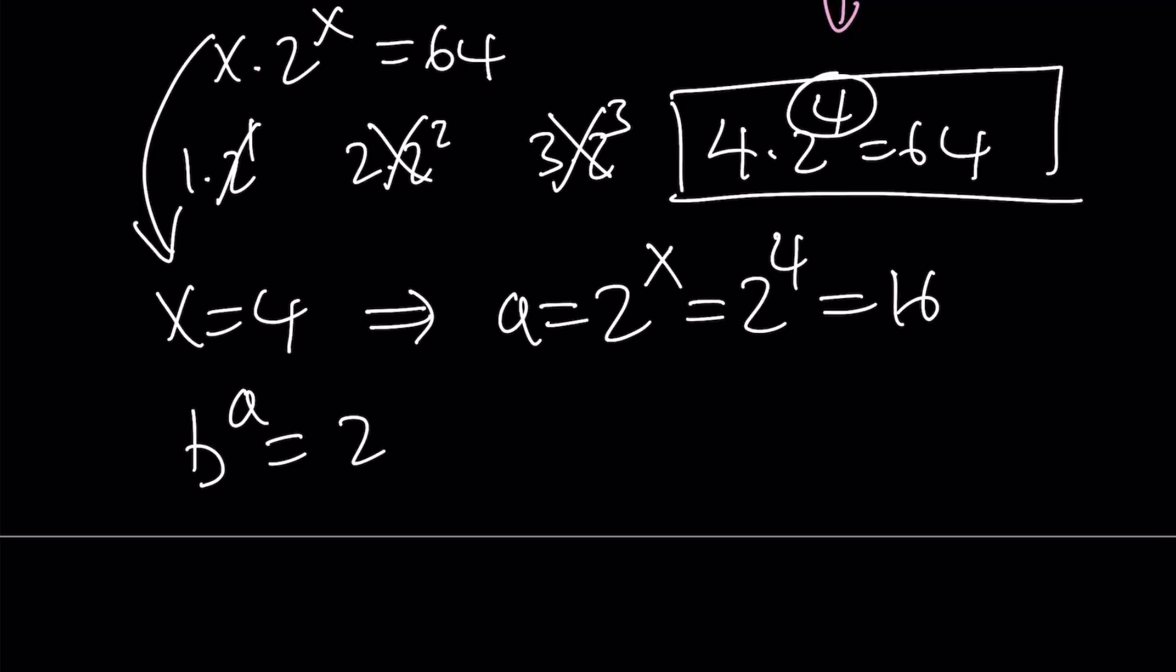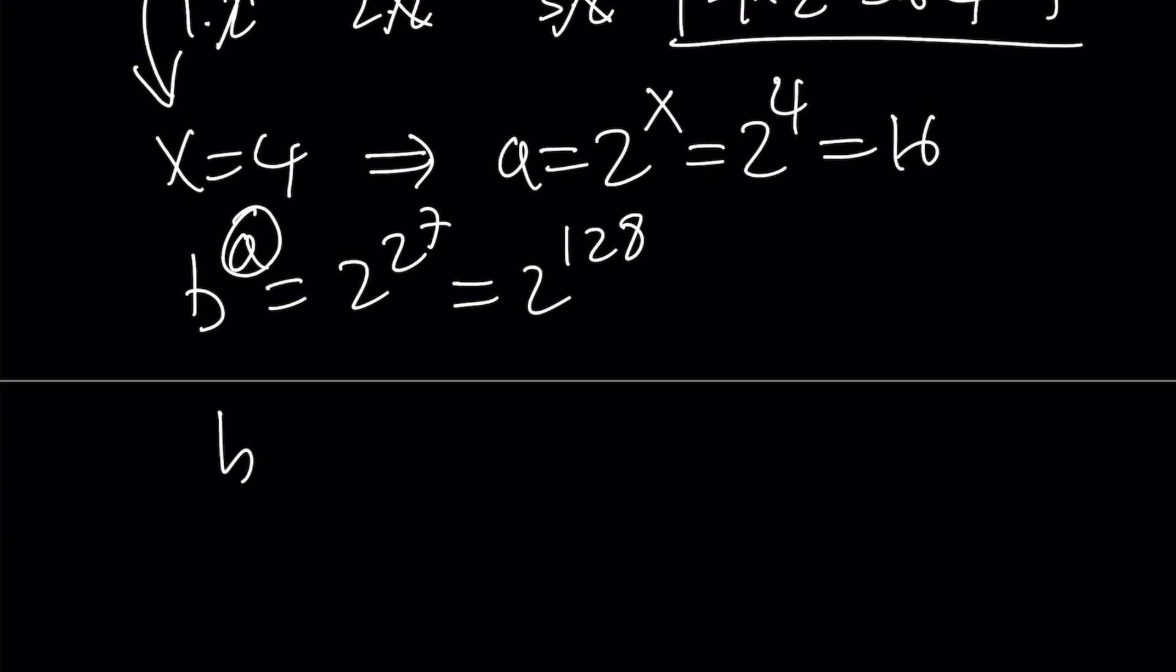Which was b^a = 2^(2^7), which I can write as 2^128, by the way. Now, let's go ahead and replace a with 16. We get b^16 equals, I mean, I said 16, but I wrote 18. That's weird, right? Anyway, b^16 = 2^128.